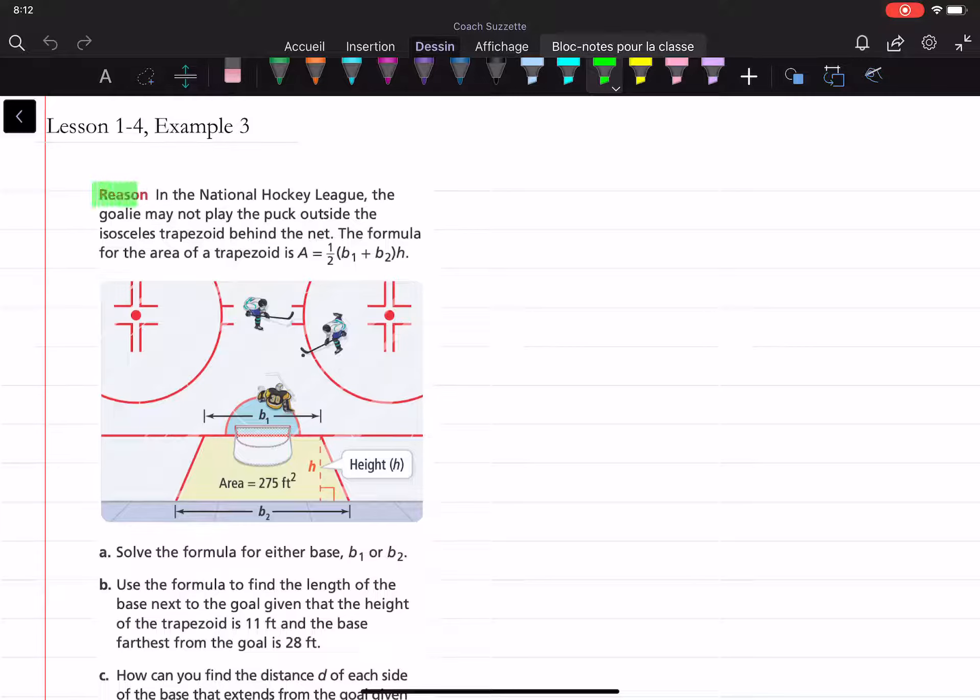We are given: In the National Hockey League, the goalie may not play the puck outside the isosceles trapezoid behind the net. The formula for the area of a trapezoid is A equals one-half times the quantity b₁ plus b₂ times h.